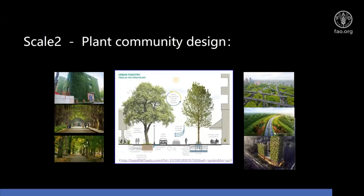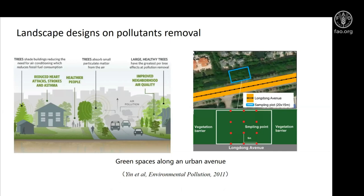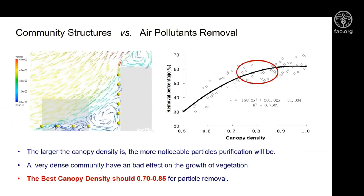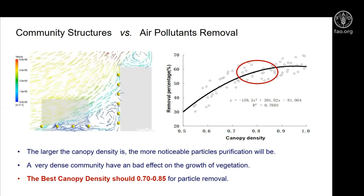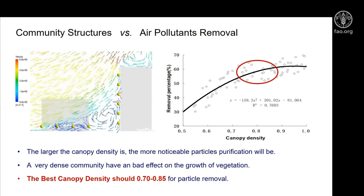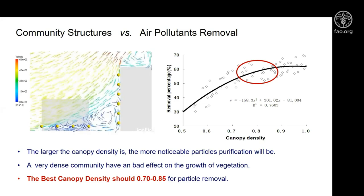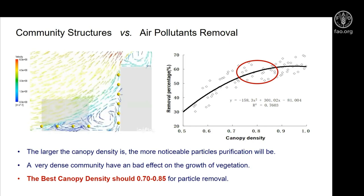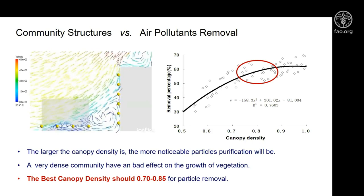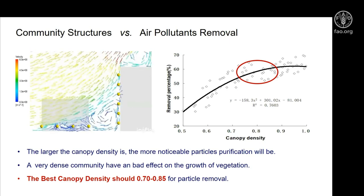At the second scale, looking at what we can see and use — there are different landscape designs, but what is a good design that could be beneficial to air pollution removal? We are looking at green space along urban avenues. We sampled and tested the PM concentration in the green space and outside it. The results show that the concentration in and over the green space was actually lower compared to the roadside. The higher the canopy density, the more noticeable the particle purification. However, trees need space to grow — if you plant trees at a very high density, they will die in future. So the best canopy density should be neither too low nor too high.